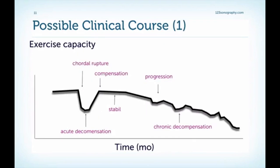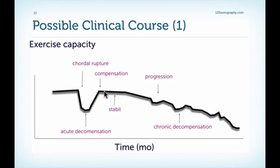To help you understand the interplay between the different forms of MR, here are two fictitious but possible clinical courses. In the first case, a patient has no or only mild MR with no symptoms and good exercise capacity, then all of a sudden has chordal rupture. This leads to significant MR, acute decompensation, and symptoms — which the patient might misinterpret. Then follows a phase of compensation where exercise capacity rises again and the patient is stable. However, left ventricular function slowly starts to deteriorate, leading to a gradual decrease in exercise capacity until the patient reaches chronic decompensation. This is the point at which the patient should be operated.